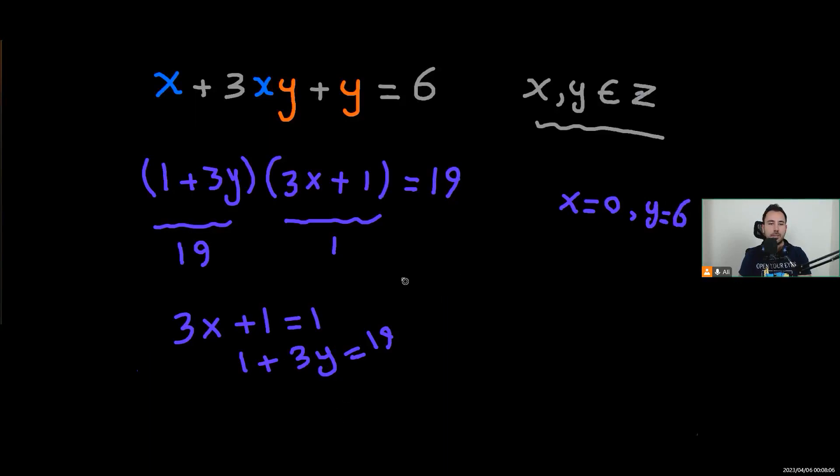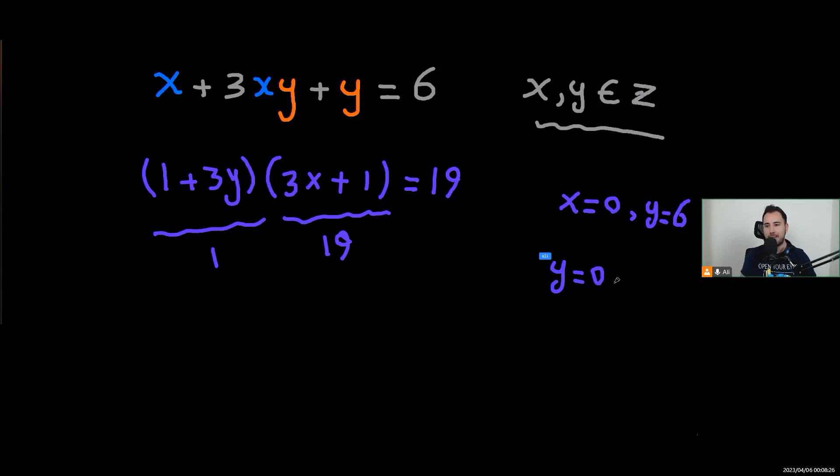So there was also the other way around. This one being 19, the other one being 1. Well, the answers would be the same, x and y will be different. So I'm going to write it here. y will be 0, and x will be 6.